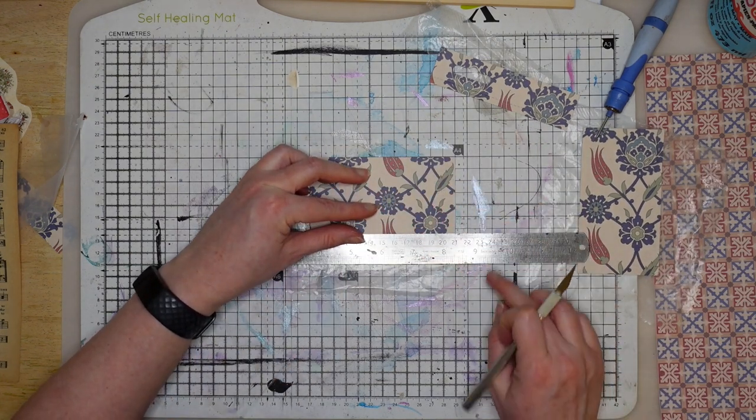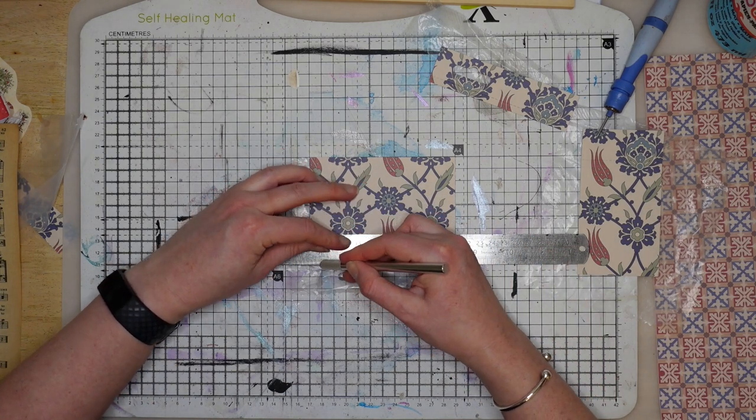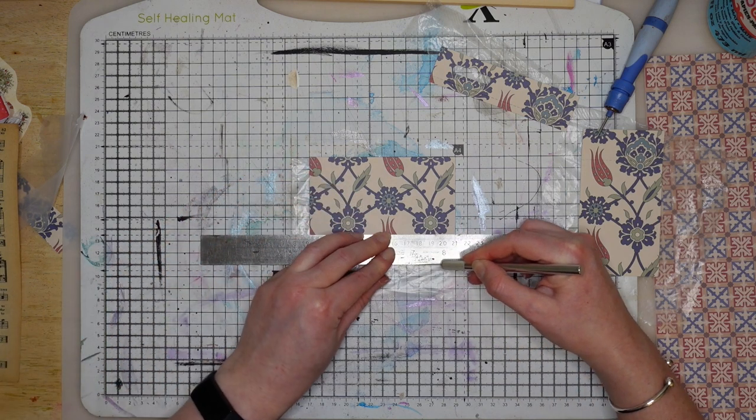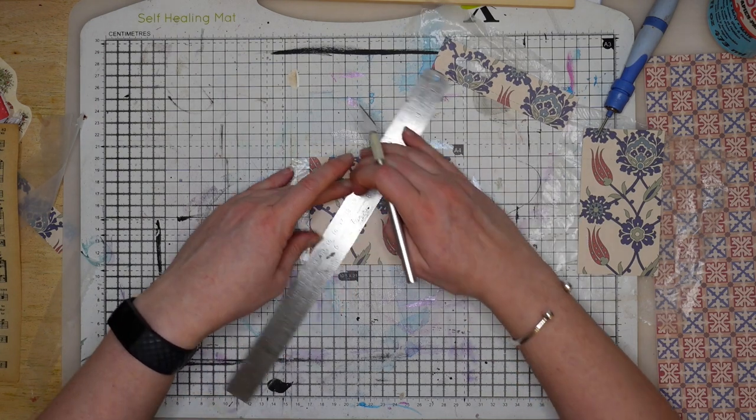I'm using these lines on my board to measure up but you can use a paper trimmer or whatever you can get to work. I actually think it would have gone through the paper trimmer okay but mine is a bit temperamental so I didn't want to have the hassle of it.